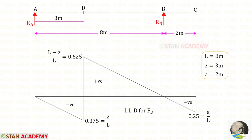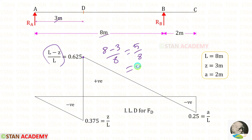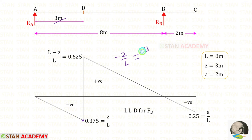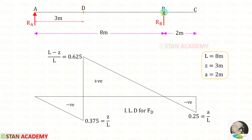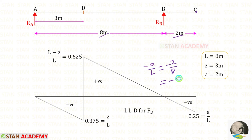Now let us draw the ILD for the shear force at point D. At point A, the ordinate will be 0. At point D there will be two ordinates. The first ordinate is (L minus Z) upon L — here L is 8 and Z is 3, giving 5 by 8 = 0.625. The second ordinate is minus Z upon L — Z is 3, so minus 3 upon 8 = minus 0.375. At point B the ordinate is 0, and at point C the ordinate is minus A upon L — A is 2 and L is 8, so minus 2 upon 8 = minus 0.25.